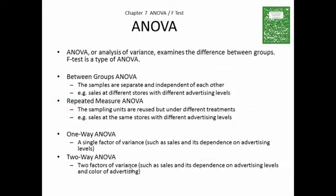To do this, we'll use a tool within Excel called ANOVA — Analysis of Variance — to examine the differences between the groups. The f-test is a type of ANOVA. With ANOVA, we have to determine: is it a between-groups ANOVA, where the samples are separate and independent of each other, or a repeated-measures ANOVA, where the sampling units are reused under different treatments? For example, sales at the same stores with different levels of advertising versus sales at different stores with different levels of advertising.